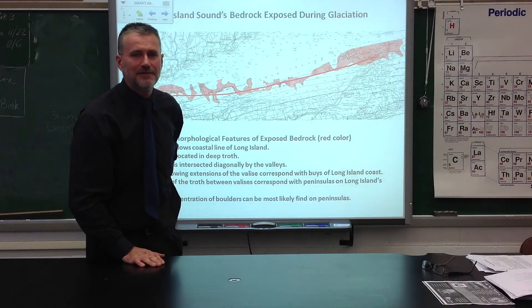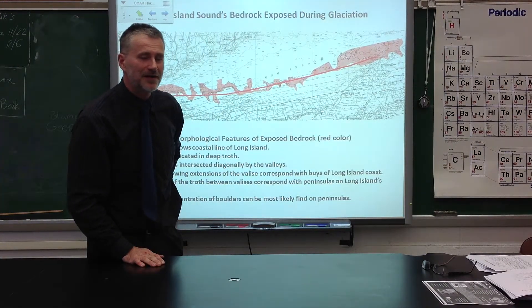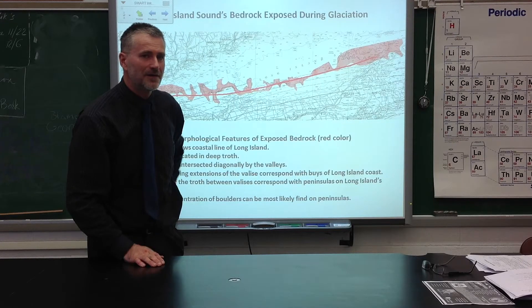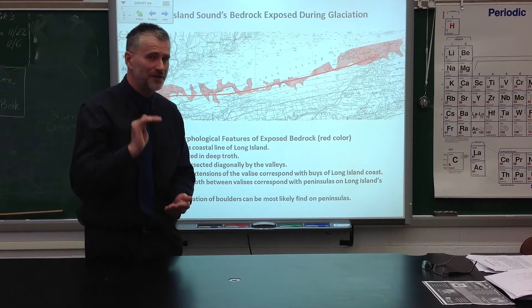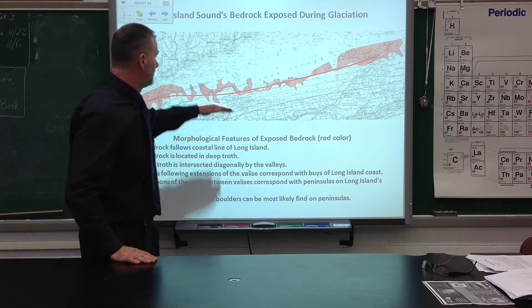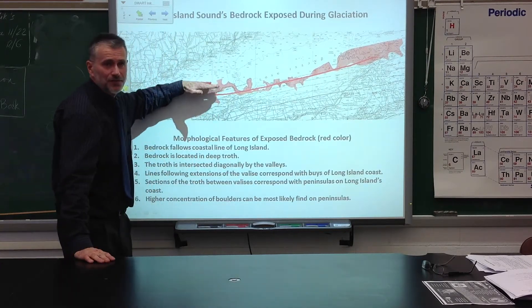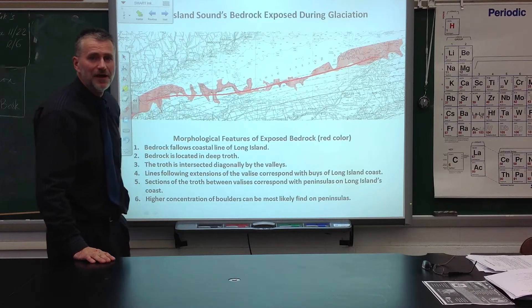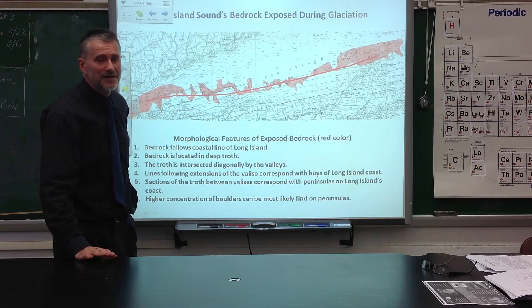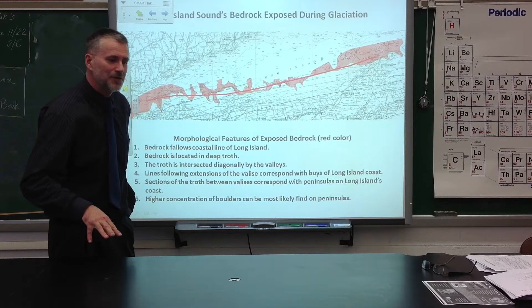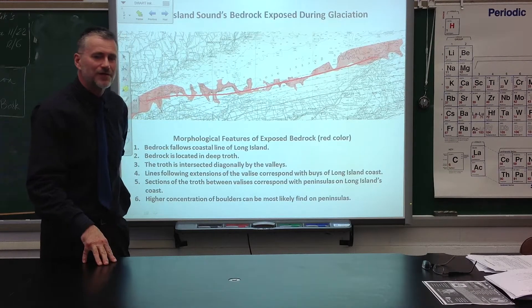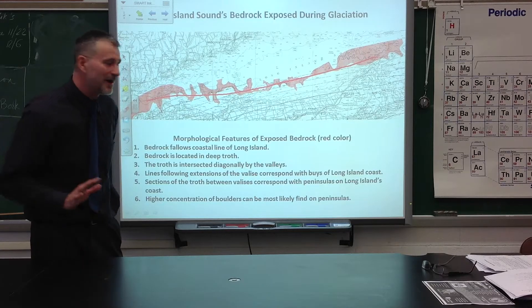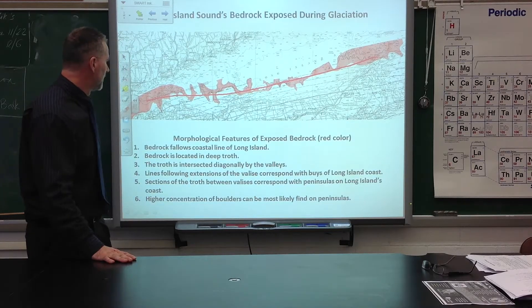Imagine that the glacier which was here had a thickness of only 300 feet. That depth, which goes to 700 feet, is going to definitely rule the direction in which the ice is going to flow.